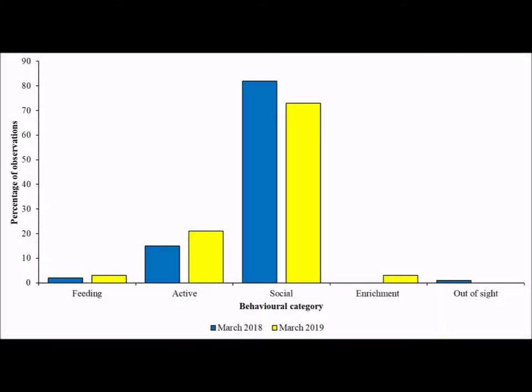A very common question amongst behavioural researchers is how much data do I actually need to collect on my animals to work out whether my data are a true reflection of their behaviour patterns? Unfortunately there is no quick and easy answer to this. This graph shows data collected on captive African hunting dogs for a short period of time — the blue bars — and a longer period of time — the yellow bars. Behaviour patterns are relatively similar between the two, however some differences emerge.